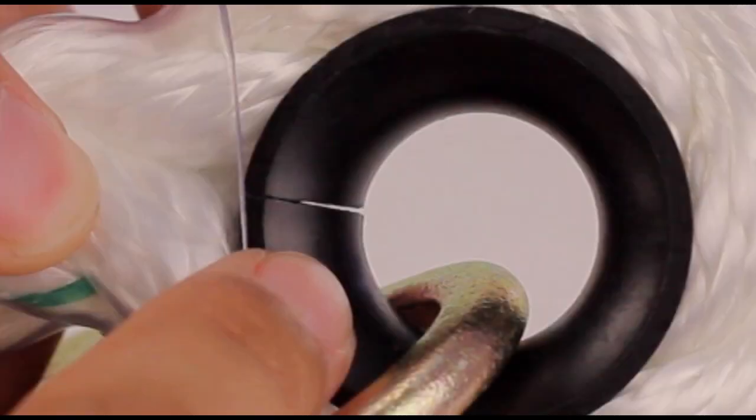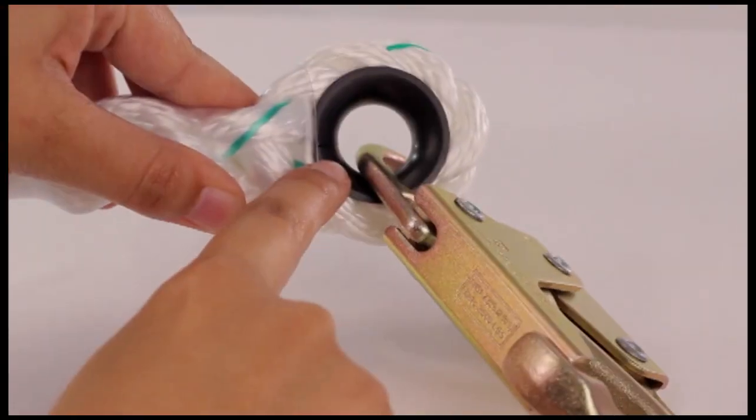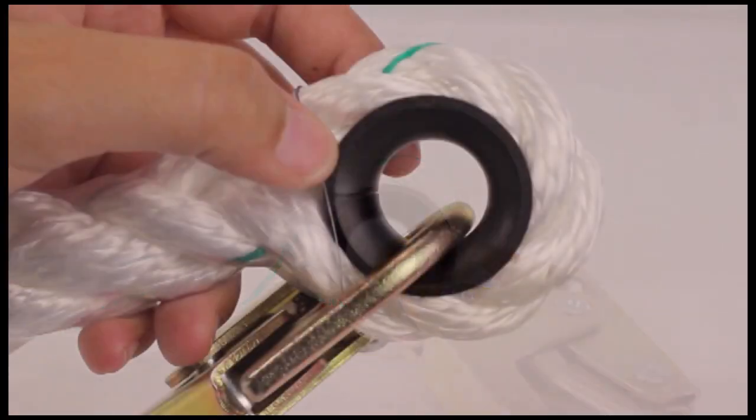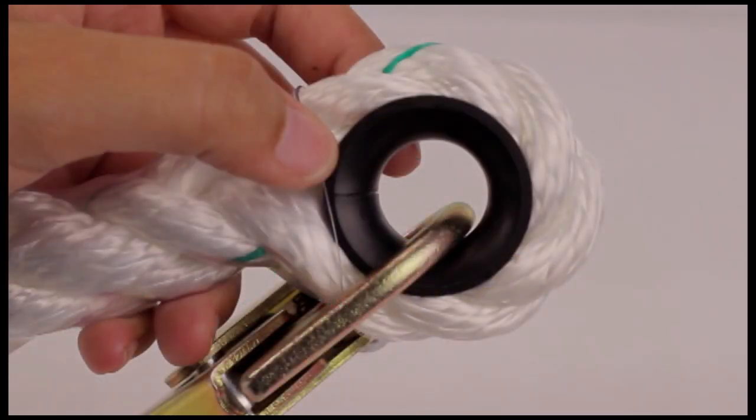Note, new thimbles contain a split manufactured by Werner. Do not use a damaged thimble. Tag and remove from service. Report the inspection date and findings into the inspection log.